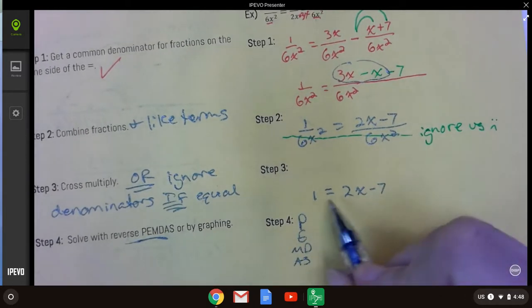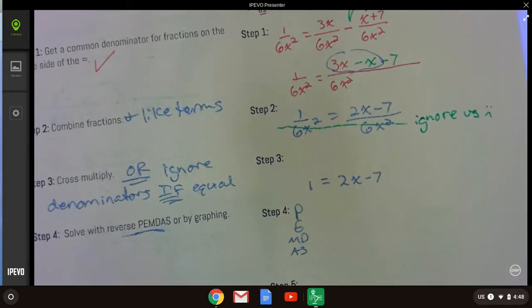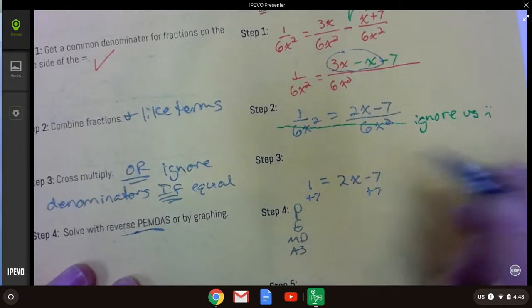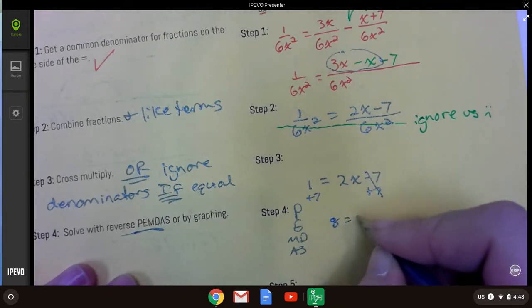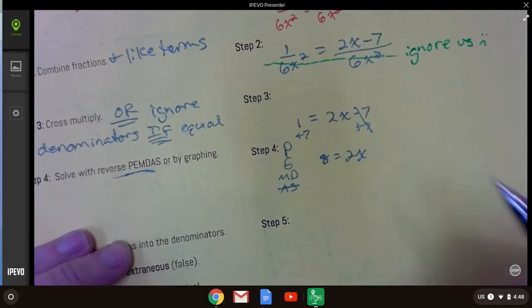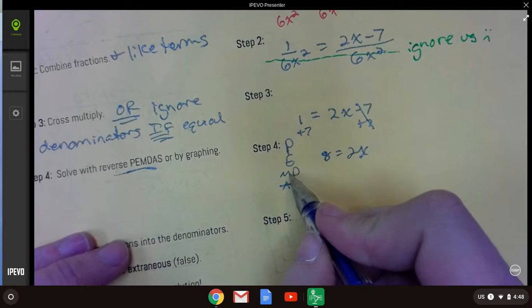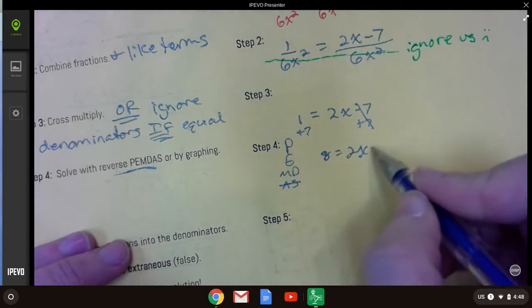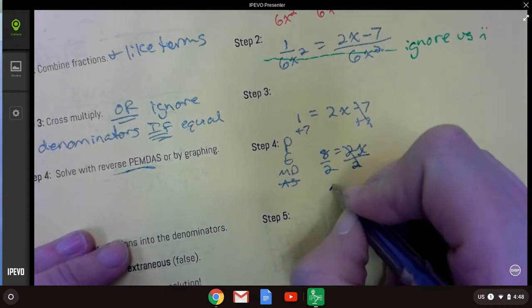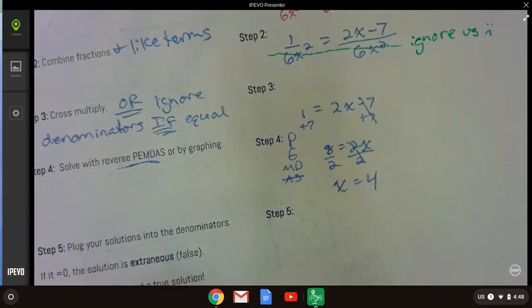Is there anything I can add or subtract here to get x by itself? Well, sure there is. I can add 7. Oh, look at you, 7. Now, subtract, done. And then, is there anything we can multiply or divide to get x by itself? Oh, absolutely. We can divide by 2. I'm going to give this x equals 4.